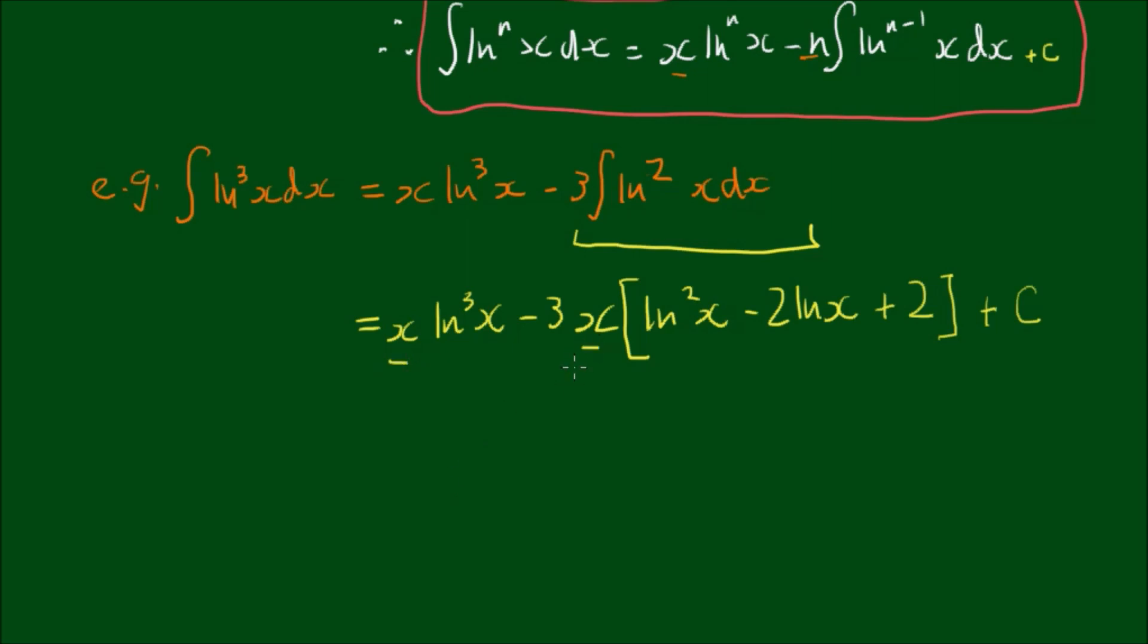So equals x outside of log cubed of x minus, now expand the 3, the negative 3 into the brackets. So minus 3 log squared of x plus 2 log x minus 6. Sorry, this should be a plus 6, plus 6, and then plus c on the end.